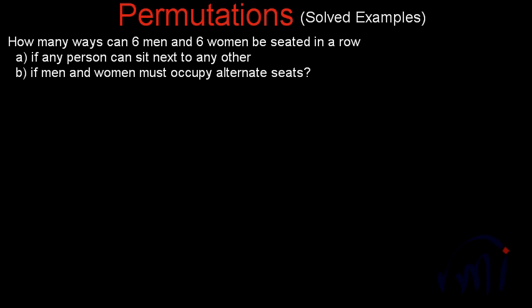Hi. We have one problem based on permutations. We have to find the ways in which six men and six women can be seated in a row. There are two parts to find: first, if any person can sit next to any other person, and second, if men and women must occupy the alternate seats.